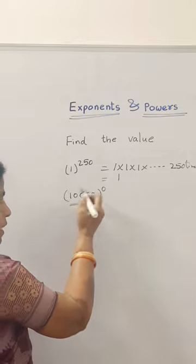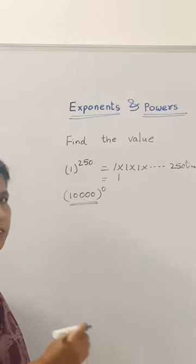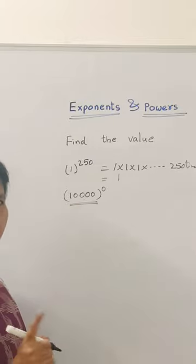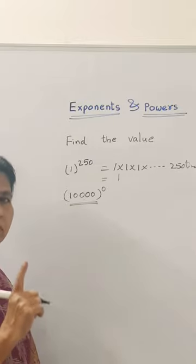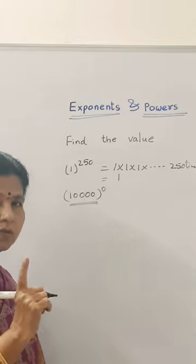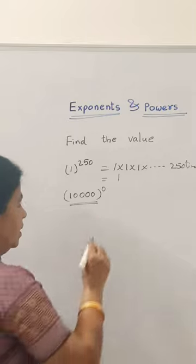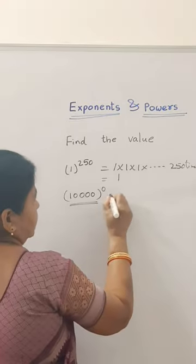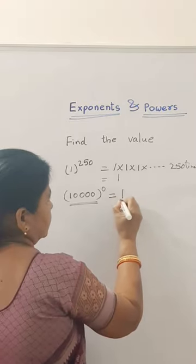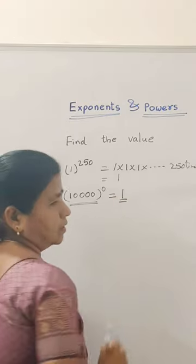10,000 raised to the power 0. Any number with power 0 gives us 1. So, this is equal to 1.